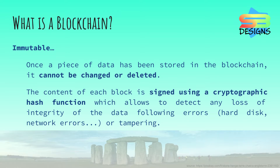Once a piece of data has been stored in the blockchain, it cannot be changed or deleted. The content of each block is signed using a cryptographic hash function, which allows detection of any loss of integrity of the data following errors, such as hard disk or network errors, or tampering.